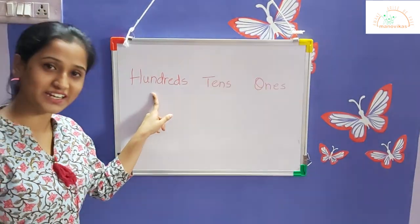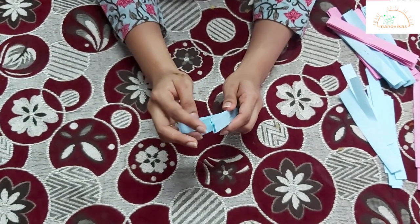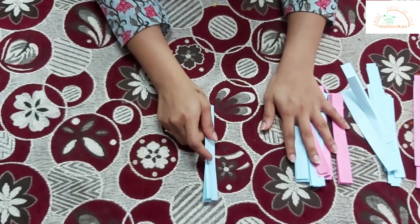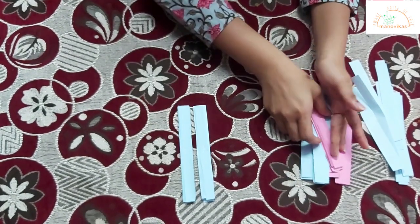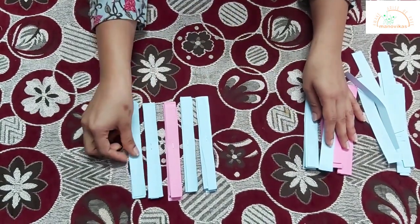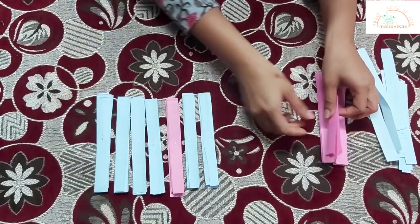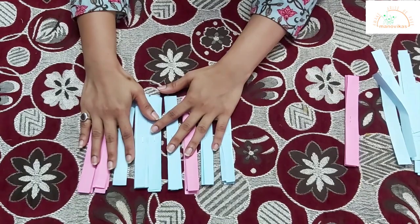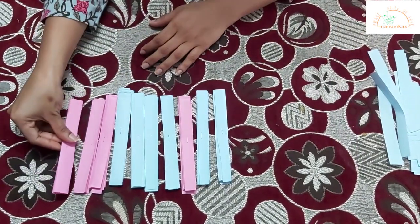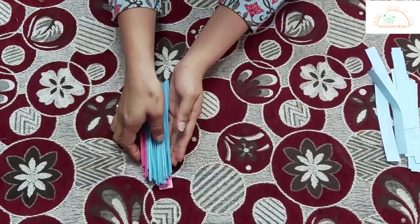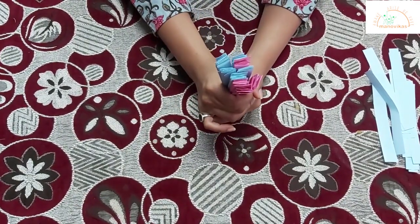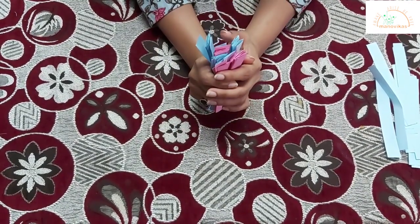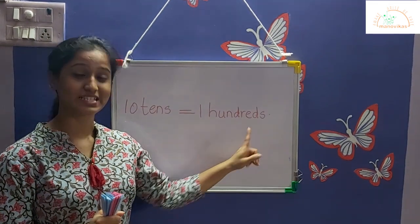the same way we are going to learn the place value of hundreds. As we know, 10 strips in a bundle make up to 10. Now here we have a few more bundles of strips. Let's start counting: one, two, three, four, five, six, seven, eight, nine — so here we have nine bundles, that is nine tens and zero ones, that is 90. We will add one more bundle to make it 100. So 10 tens make up to 100.